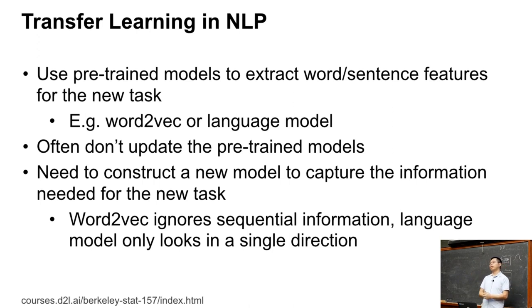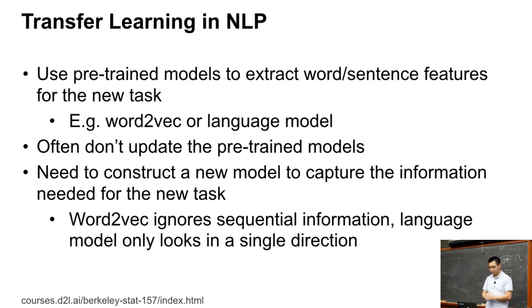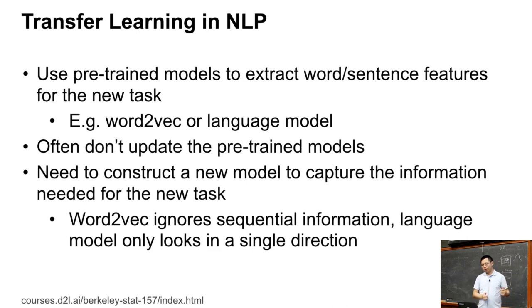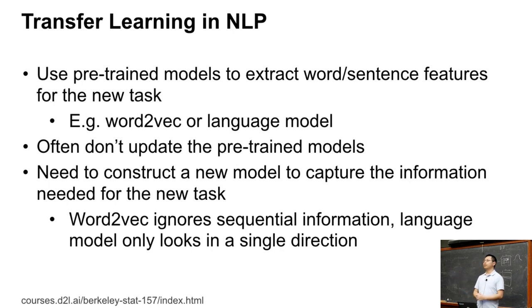We still need to construct LSTMs or recurrent neural networks to capture all the temporal information. This means that while it's good to have word2vec embeddings, we still need to train all these RNN models, which requires a large dataset for training.